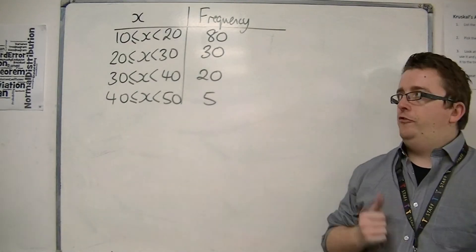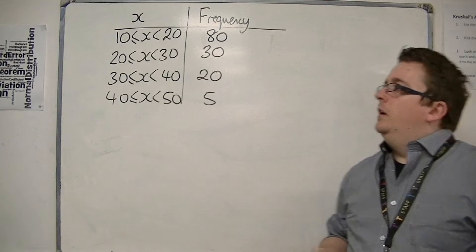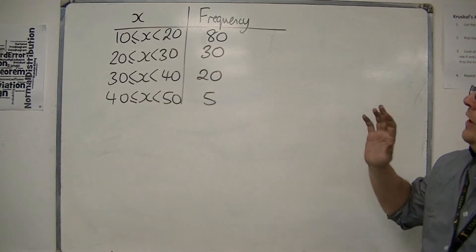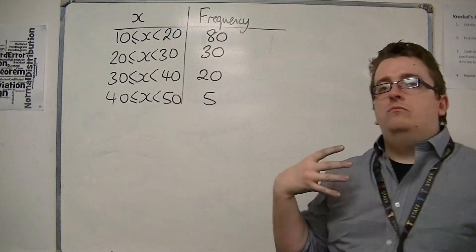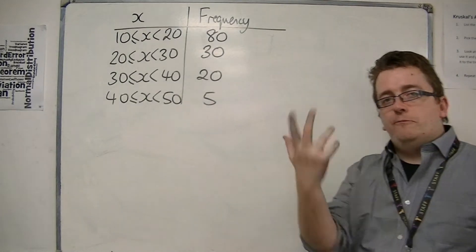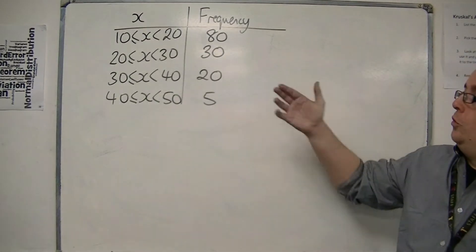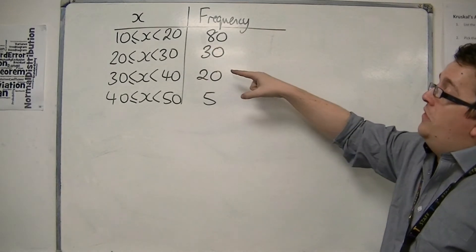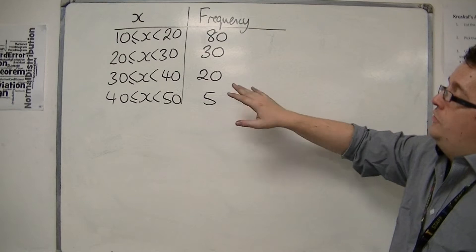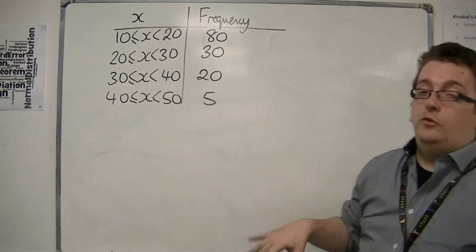Here is a grouped frequency table. We've got 80 bits of data between 10 and 20, so 11, 12, 13, 14.27, all those would go into that group. We've got 30 between 20 and 30, 20 between 30 and 40, and 5 between 40 and 50.